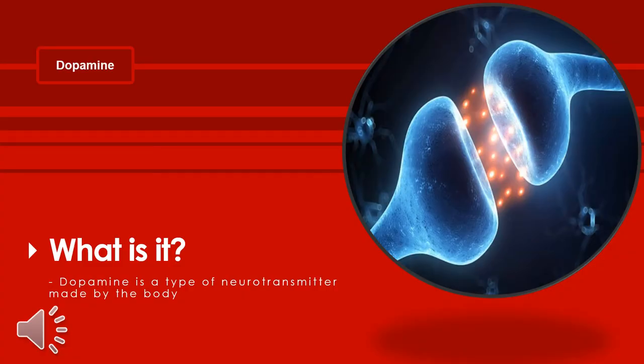To understand this research, I must first know what dopamine is. By definition, dopamine is a neurotransmitter made by the body. It is used by the nervous system to send messages between nerve cells, so it is sometimes also called a chemical messenger. Dopamine plays a huge role in how we feel pleasure, and it is also a big part of our unique human ability to think and plan.